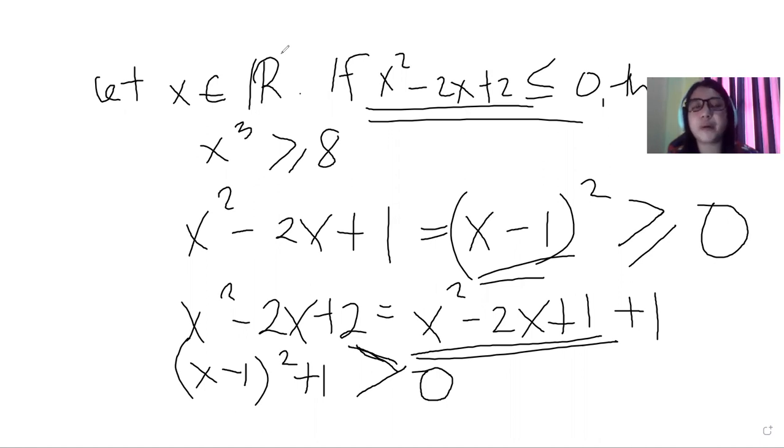Therefore, going back to what we are proving, x² - 2x + 2 less than or equal to 0 is not true.